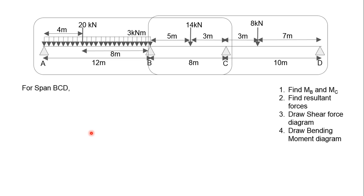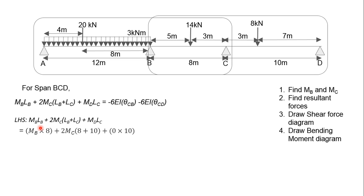Next, for your span BCD, it's the same standard formula but the alphabets you have to add one on top of each from A to B and B to C and C to D. For the left-hand side, MBLB plus 2MC bracket LB plus LC close bracket plus MDLC. Because we are taking a moment at D now, so the moment at D is 0. So I sub in the values, we get 8MB plus 36MC. That's our left-hand side.